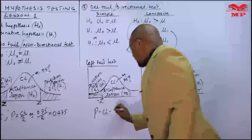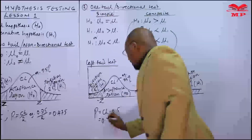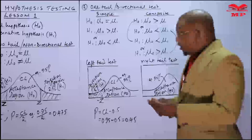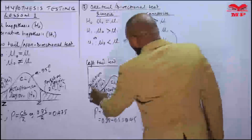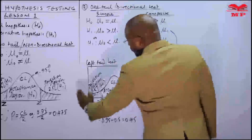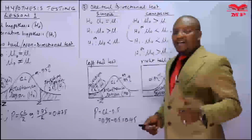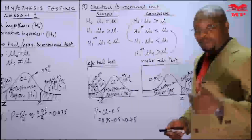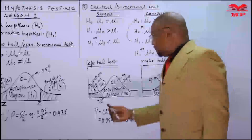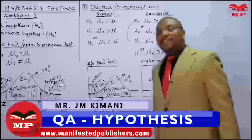We know the entire acceptance area is 95%. If we exclude the right hand side half, which is 50%, the balance on the left hand side tells us where the 5% starts. So it is the confidence level minus 0.5: 0.95 minus 0.5 equals 0.45. This means eliminating the 5%, you remain with 45% within the acceptance region. From the normal distribution table, you read 0.45, and the value of Z is 1.65.